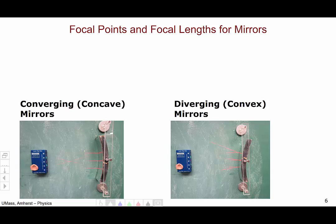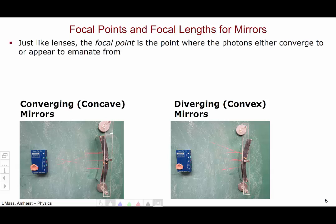So, now let's talk about focal lengths and focal points for mirrors. Just like lenses, the focal point is the point where the photons either converge to or appear to emanate from. For the concave mirror which is converging on the left, we've already seen that light comes in and converges to some point. This is known as the focal point.